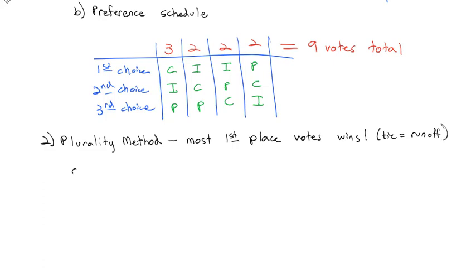Looking at our dessert choices, if we look at cake, which was the first option, cake was number one for three people. So cake gets three votes. Ice cream was number one in both these center columns, so we're going to get two votes plus two votes equals four votes total.